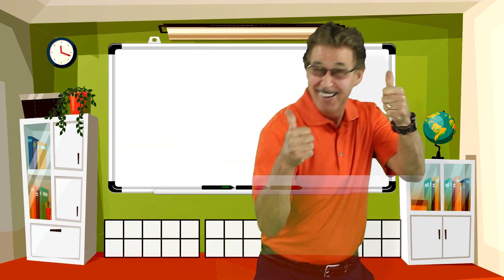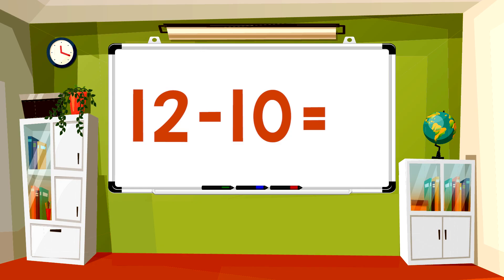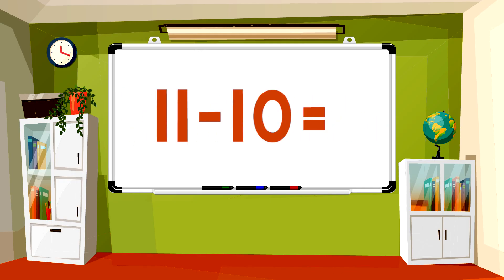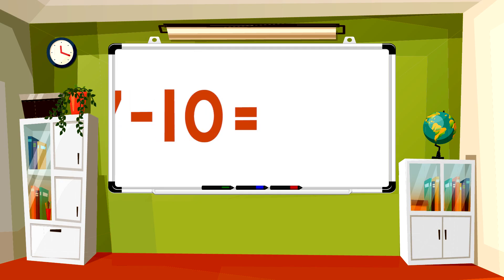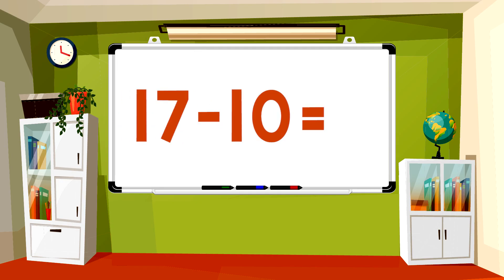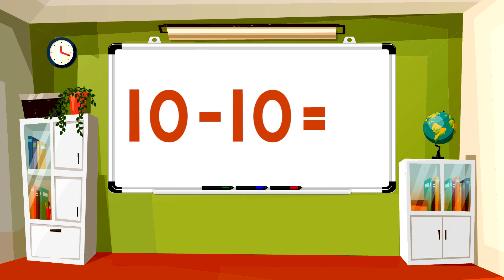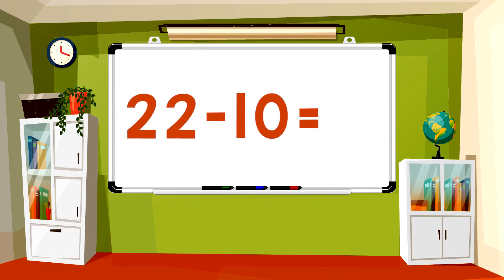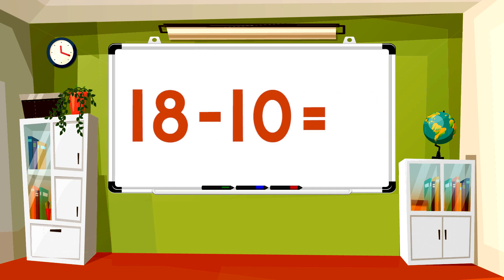Now you answer on your own. 12 minus 10 equals 2. 20 minus 10 equals 10. 11 minus 10 equals 1. 19 minus 10 equals 9. 17 minus 10 equals 7. 10 minus 10 equals 0. 14 minus 10 equals 4. 16 minus 10 equals 6. 13 minus 10 equals 3. 22 minus 10 equals 12. 18 minus 10 equals 8. 15 minus 10 equals 5.